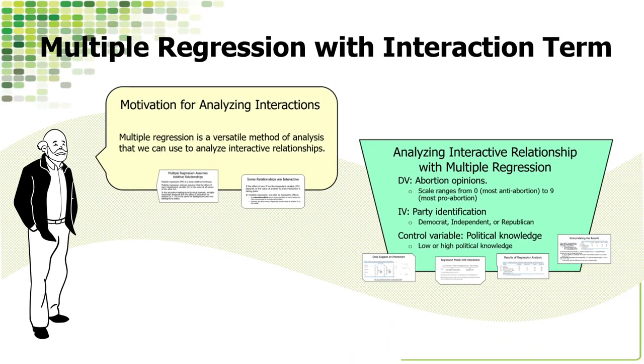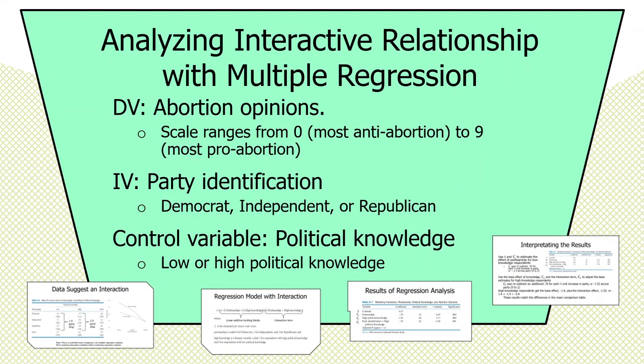Let's introduce a new example. This is survey data — I believe this is the American National Election Study. Think of a dependent variable measuring abortion opinions among a large group of respondents. The scale scores range from zero, the most anti-abortion position, to nine, the most pro-abortion position. We're going to calculate mean values of this dependent variable and examine the effect of party identification on these mean values. The independent variable is party identification, taking on three values: Democrat, Independent, and Republican.